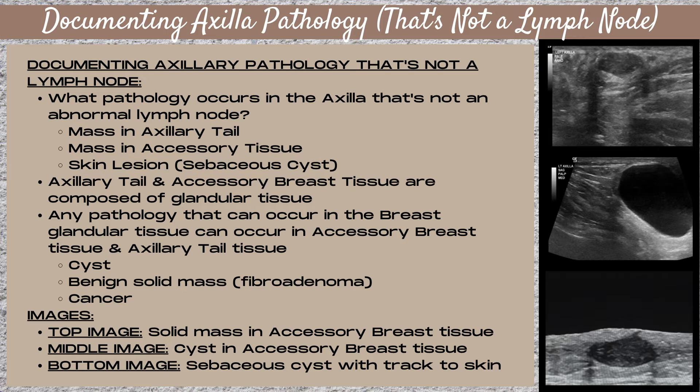You can have cysts, benign solid masses such as a fibroadenoma, and you can also find a cancer. In the images to the right, the top image is a solid mass within accessory breast tissue. You'll note that the glandular tissue in this image is white and it's located right underneath the skin line. That's how we know it's accessory tissue, and that accessory tissue surrounds the mass.